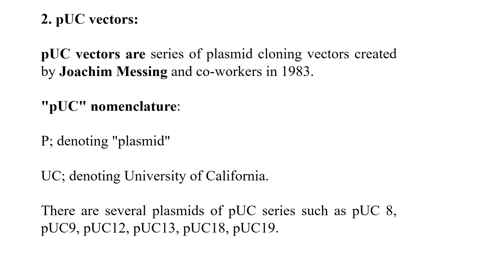The next most important vector is called the pUC vector. It is a series of plasmid cloning vectors created by Josham Messing and co-workers in 1983. In the name pUC: 'p' denotes plasmid and 'UC' denotes University of California, where the work was done. There are several plasmids in the pUC series, such as pUC8, pUC9, pUC12, pUC13, pUC18, and pUC19.